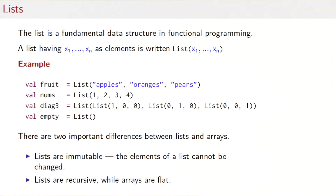Lists are sequences just like arrays, which you might know from Java or C, but there are two important differences. First, lists are immutable — you can't change an element of a list. Second, lists are recursive, while arrays are flat. The lists in the Scala standard library are very much like the lists we constructed from scratch last week — the basic construction and data structures are the same — but the Scala library lists carry many more operations.